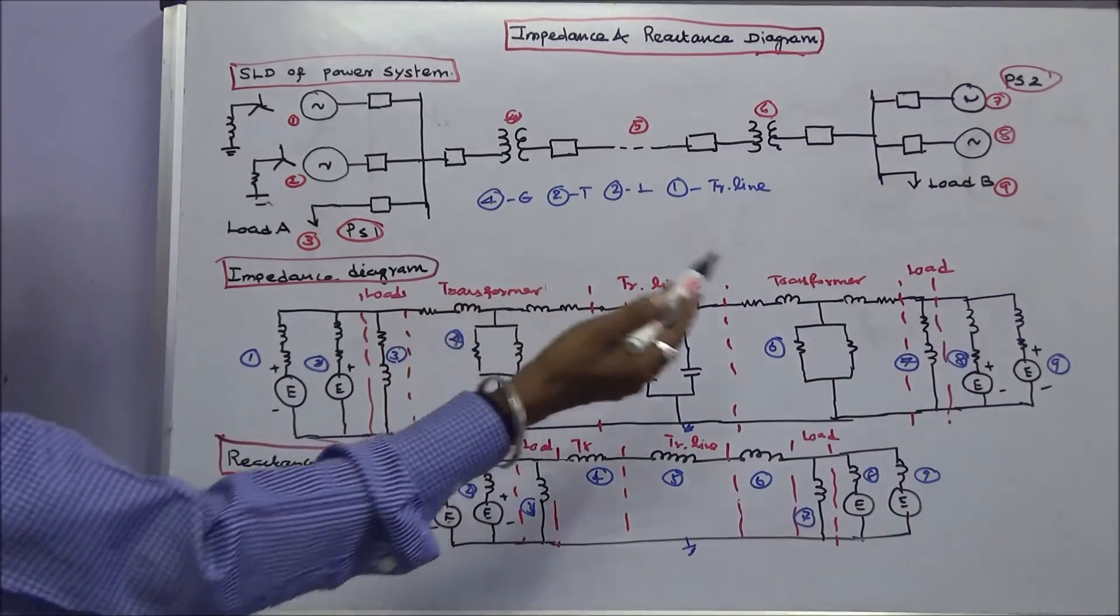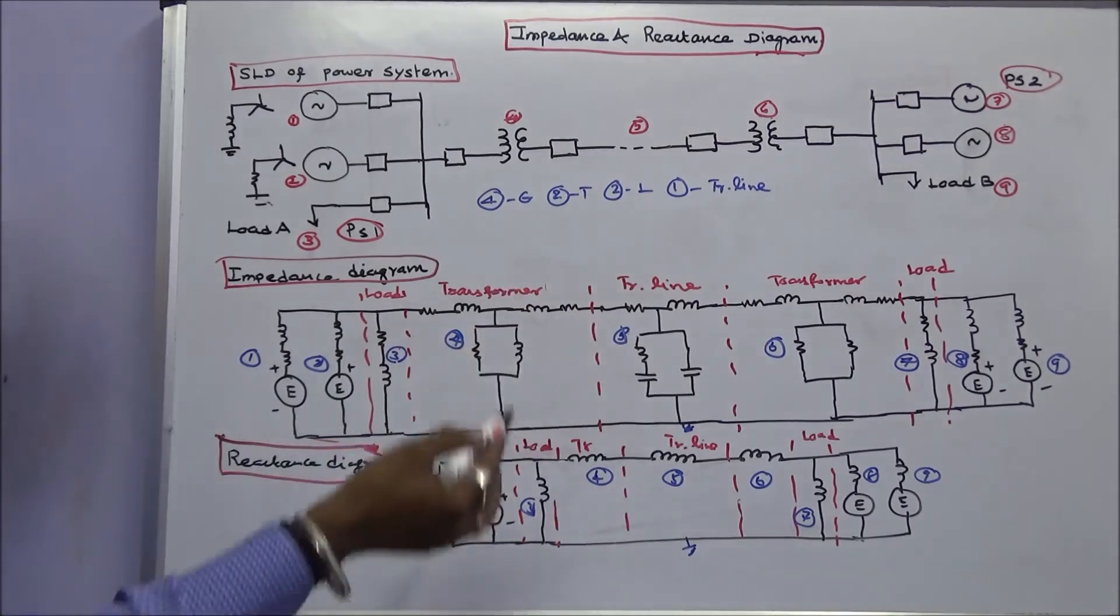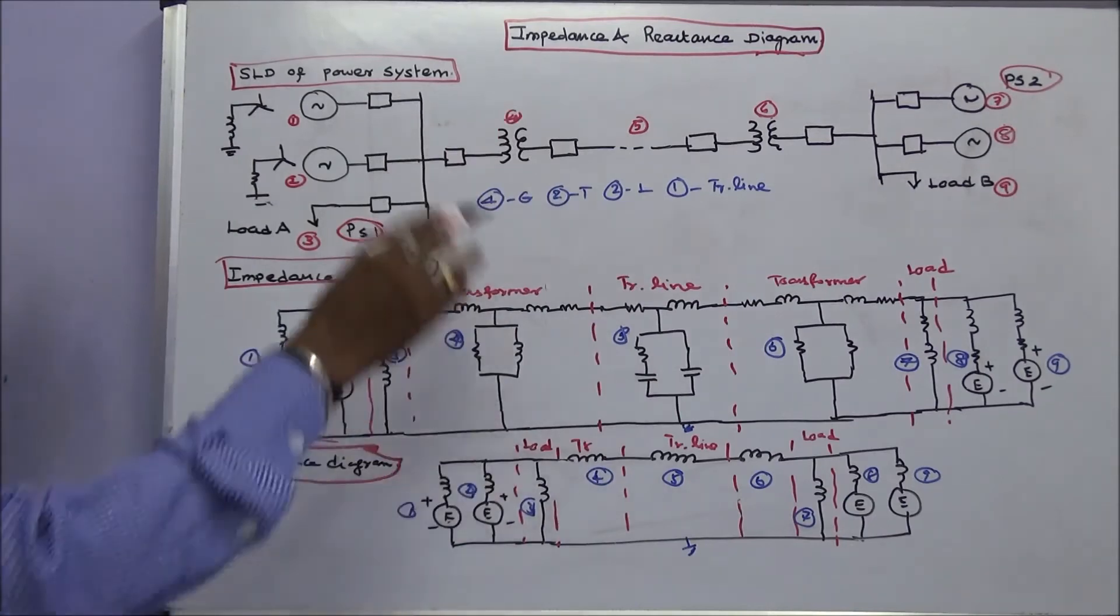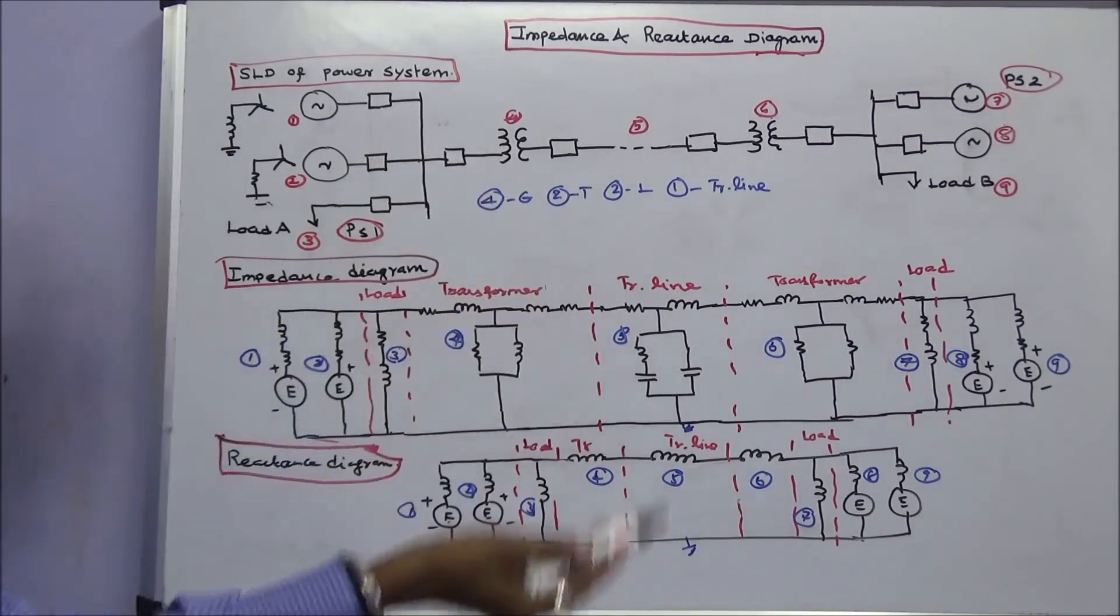If we neglect all the resistances in the impedance diagram, we get a reactance diagram. This is the reactance diagram of this network. This is the basic difference between impedance and reactance diagram.